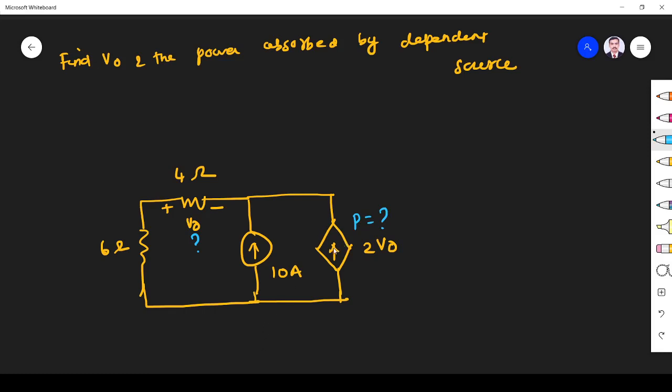So if I want power absorbed, this is a current source, dependent current source. So first I have to find V0, then only I can get a I value. From V we can find power. So we try to find V0.